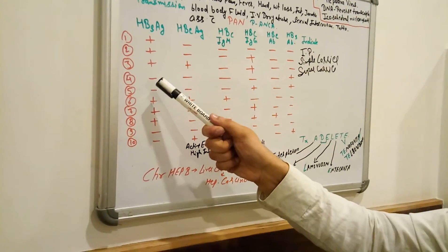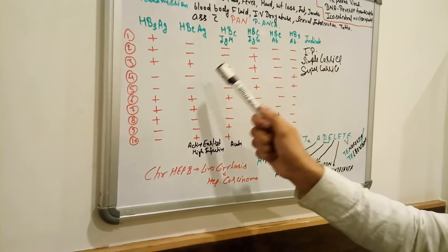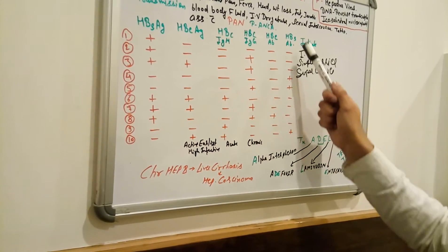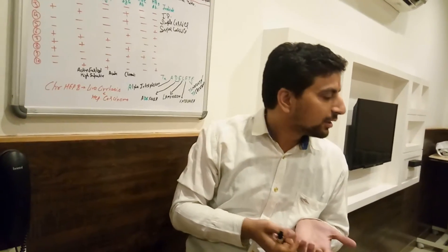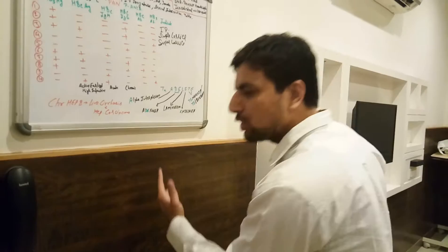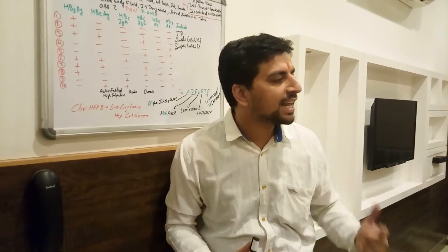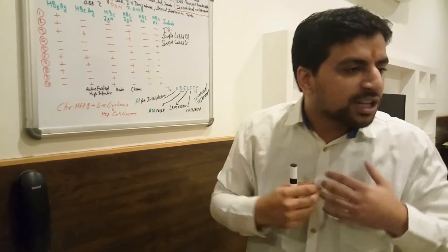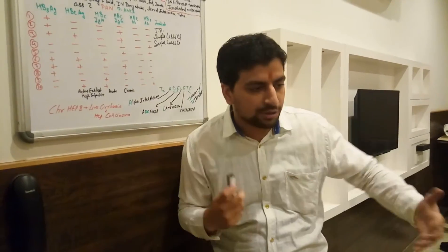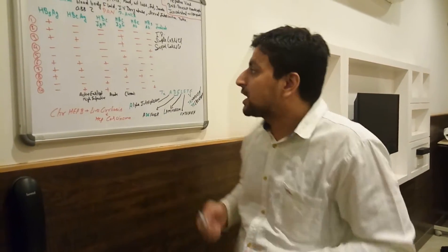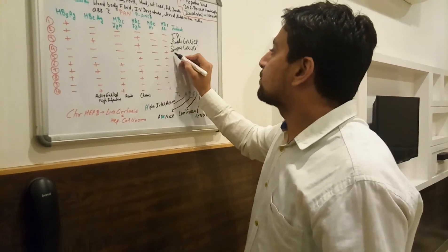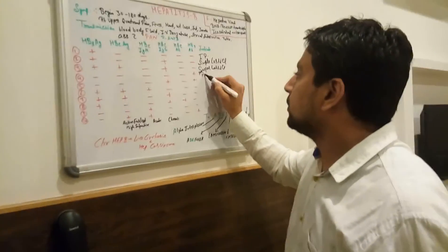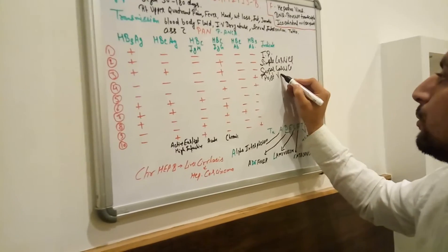If Hepatitis B surface antigen is negative, e-antigen is negative, all markers are negative, and only Hepatitis B surface antibody is positive — Dr. Emily answered: post vaccination. Yes, he is absolutely right. Only surface antibody positive indicates post-vaccination status.